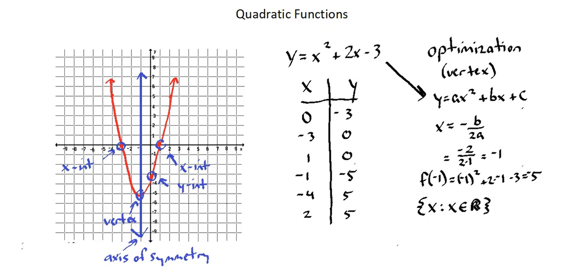The range, the y values, y such that, observing our parabola, y is going to be greater than or equal to negative 5, and y is an element of the real numbers. This is the domain, the x values, and the range, the y values, for our function.